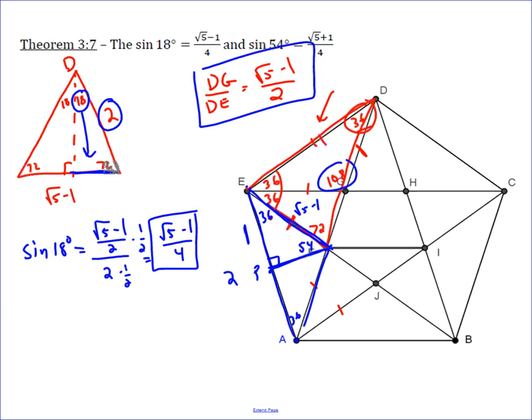So if you want to find sine of 54 degrees, you're going to be opposite over hypotenuse. Well, opposite the 54 was the 1 over the hypotenuse, which we call root 5 minus 1. Well, we don't like to leave the radicals in the denominator, so we rationalize it by multiplying by its conjugate.